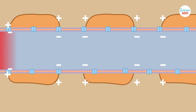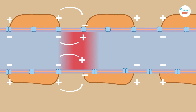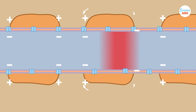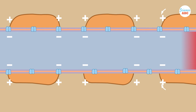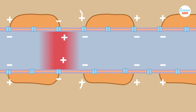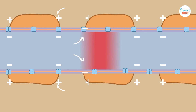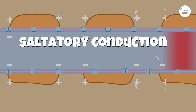In such covered axons, the signal doesn't have to travel through the entire length of the axon, but only through these gaps, making the signal travel even faster. This type of jumpy signal transmission is called saltatory conduction.